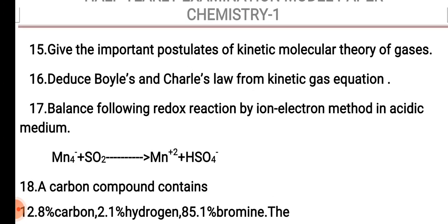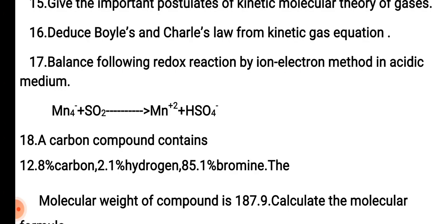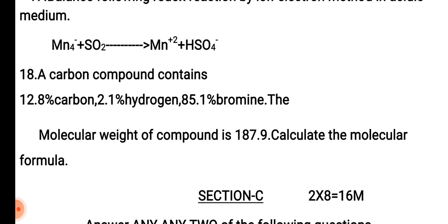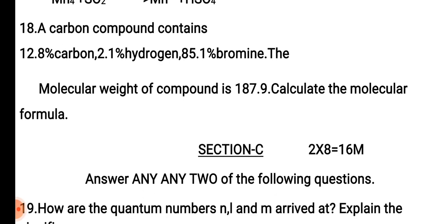Question number 18: A carbon compound contains 12.8% carbon, 2.1% hydrogen, and 85.1% bromine. The molecular weight of the compound is 187.9. Calculate the molecular formula of the compound using the empirical formula and molecular formula approach.